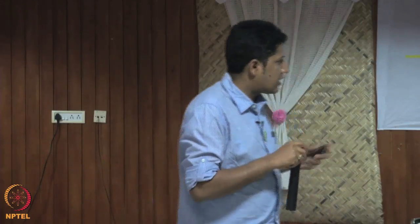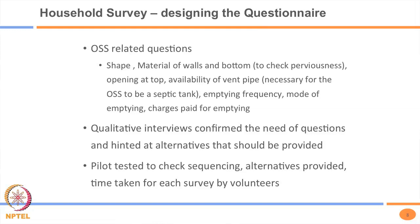The questions related to on-site systems cover: shape and material of the wall and bottom, whether it has an opening at the top, availability of a vent pipe — to ascertain whether the OSS is a septic tank or not — emptying frequency, mode of emptying (manual or mechanized), and charges paid for emptying. Qualitative interviews were used to confirm questions, and the questionnaire was pilot tested by students pursuing a master's in social work, who checked sequencing and answer options. Anything going wrong at this stage impacts the analysis.